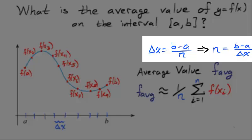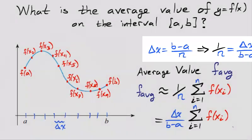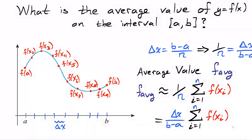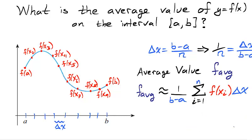Manipulating the equation delta x equals b minus a over n, we obtain n equals b minus a over delta x. In inverting the equation, we find that 1 over n is delta x over b minus a. Replacing 1 over n with delta x over b minus a, we have a new way of approximating f average.